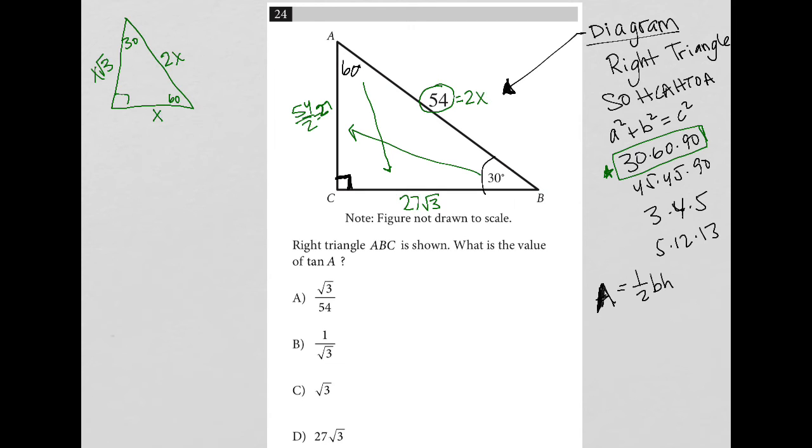So what's this question asked for? Right triangle ABC is shown. What is the value of tan A? So now we're back up here to the SOHCAHTOA-ness. Tangent is this last three-digit term here, TOA. Tangent represents the opposite over the adjacent.